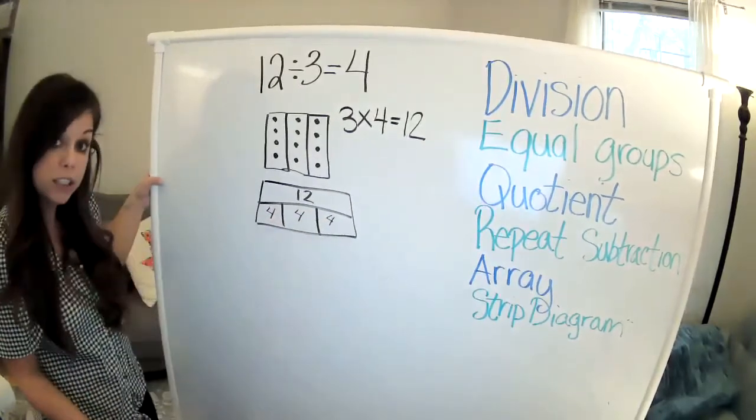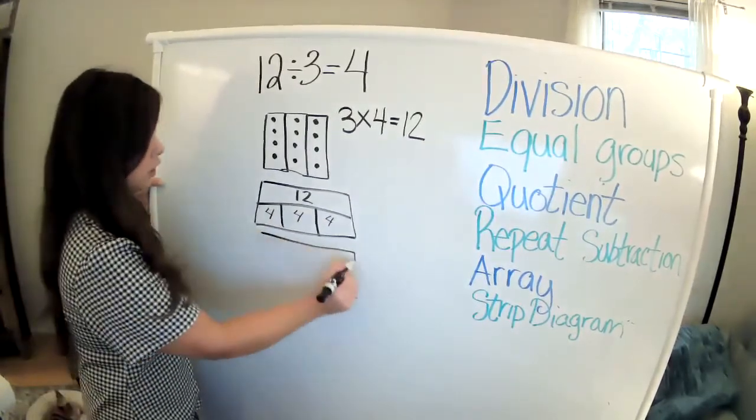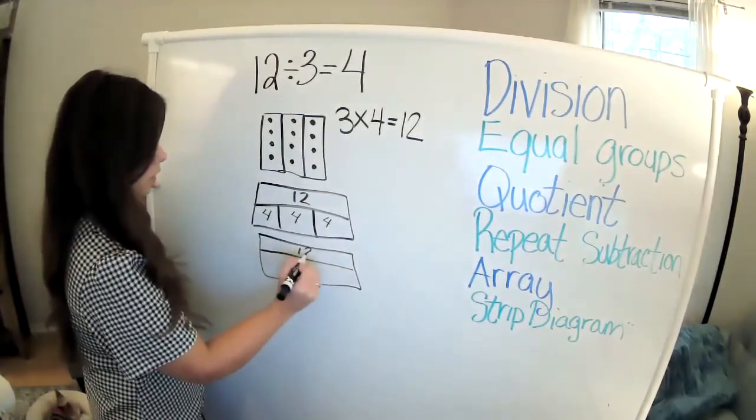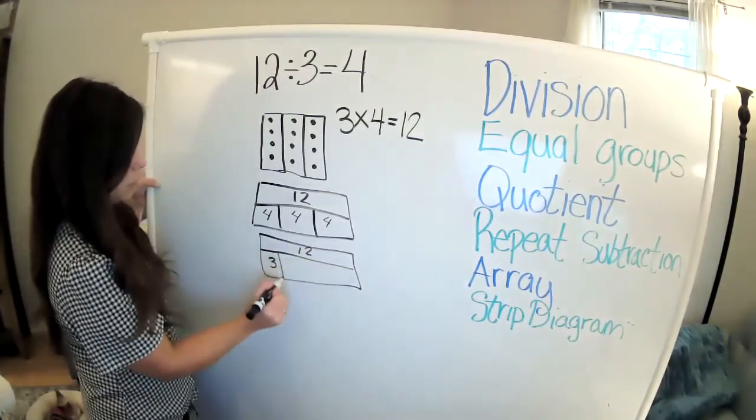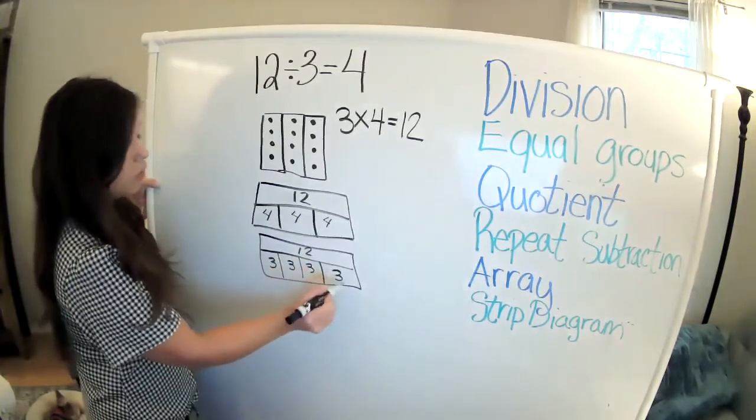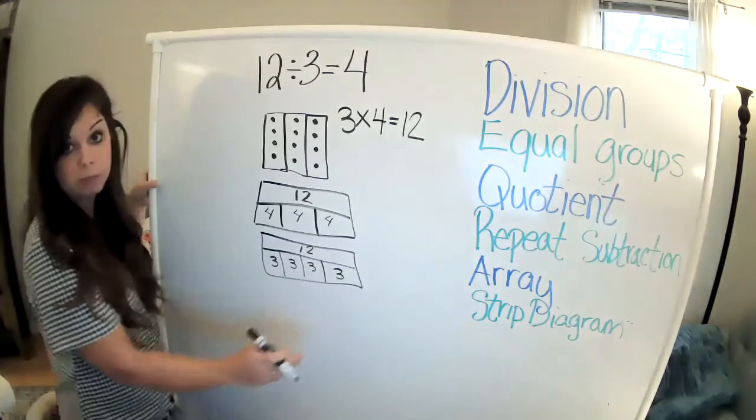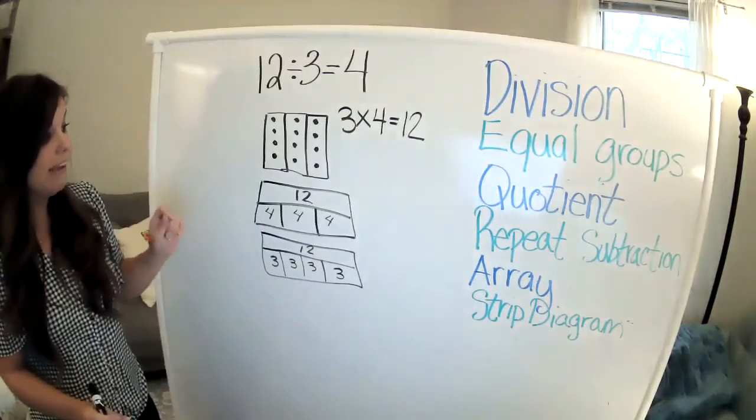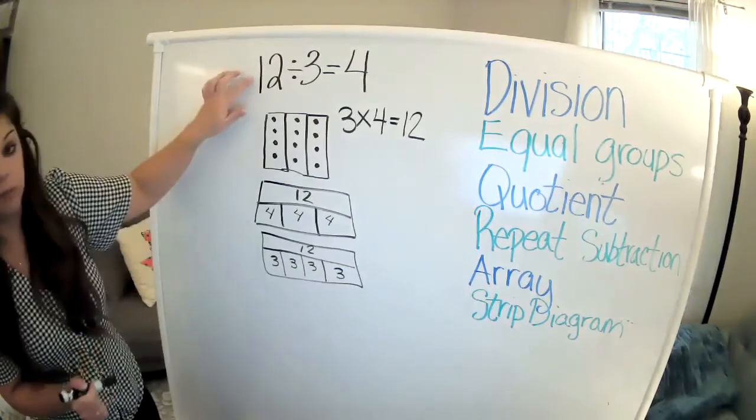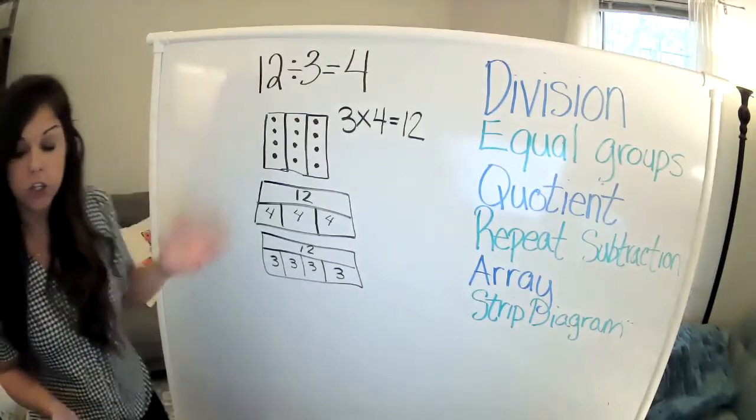You can also show that 12 with three in each group will give you four equal groups. So if you want to show it with an equation, you can pick this kind of equation.